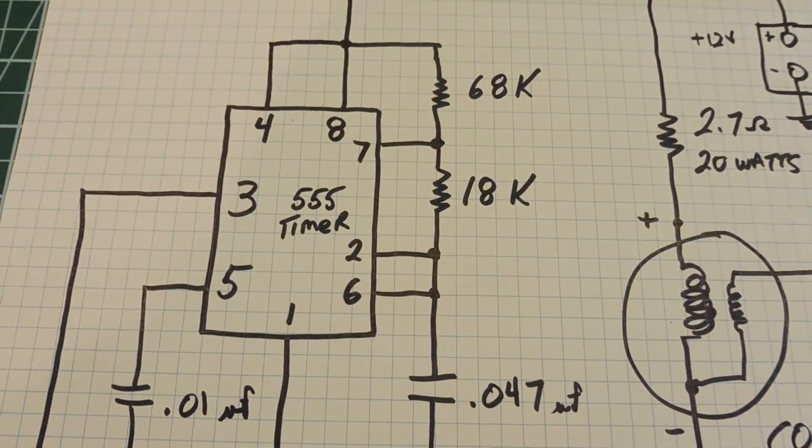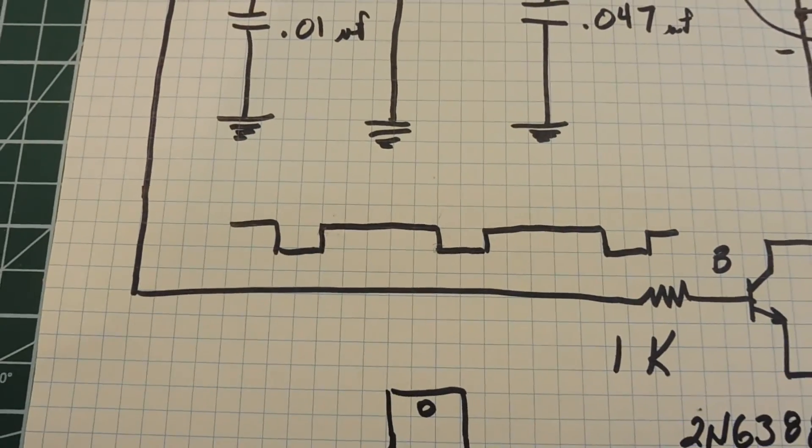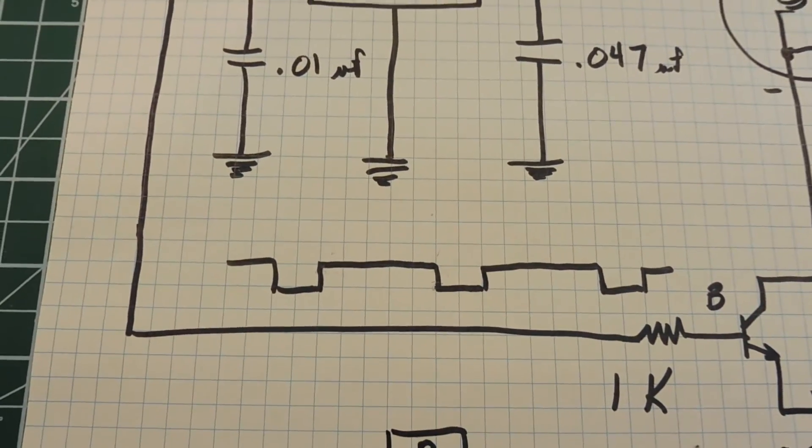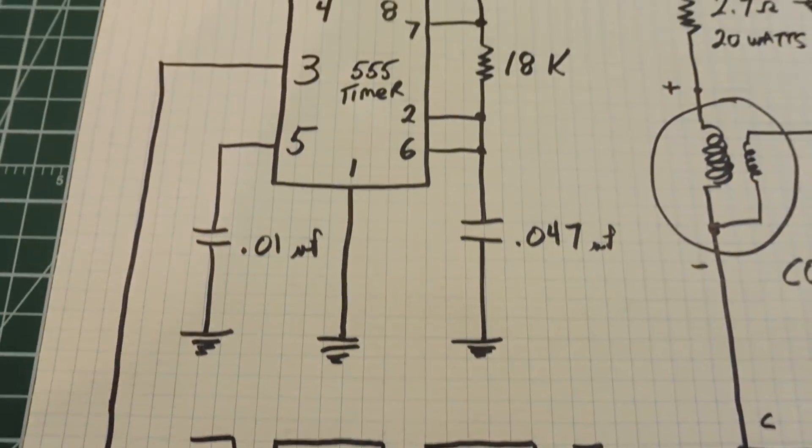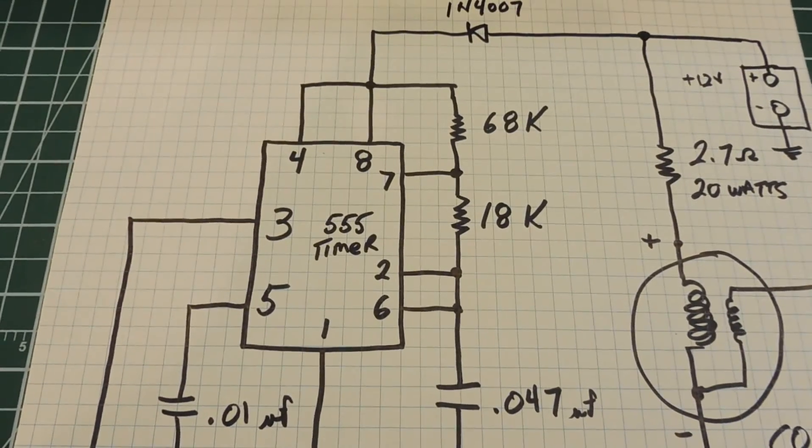Because on a 4 cylinder, the frequency will be lower. So this circuit is designed to run on a V8 engine and you'll need some modifications to run it on a 4 cylinder.